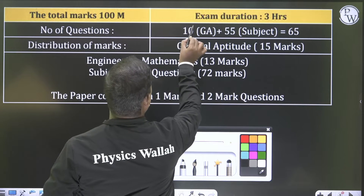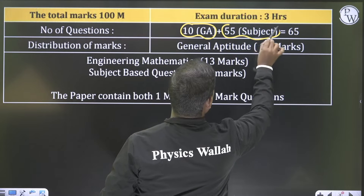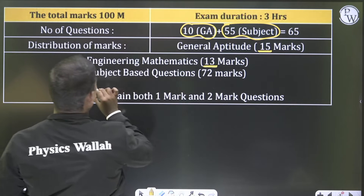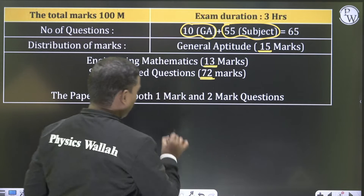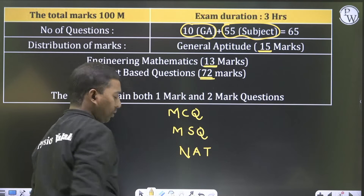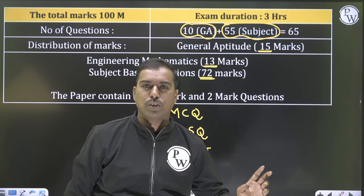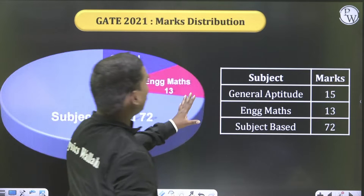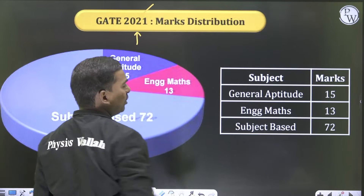Coming to the number of questions: 10 from general aptitude, and 55 questions from the subject. The mark distribution is — general aptitude 15 marks, engineering mathematics 13 marks, subject-based questions 72 marks. The paper contains one-mark and two-mark questions. It includes MCQ (only one option correct), MSQ (one or more options correct), and numerical answer type questions where no options are given — you must provide the correct answer directly.